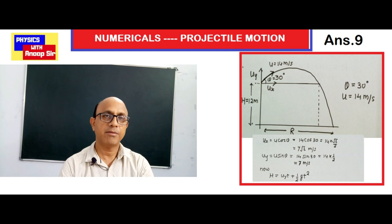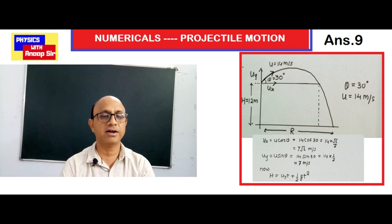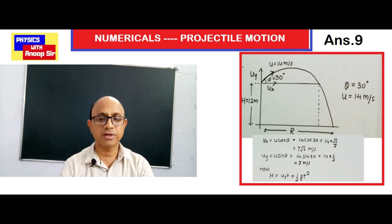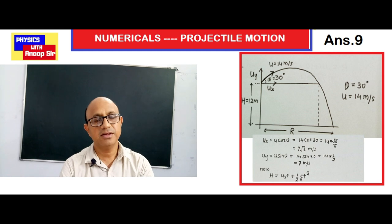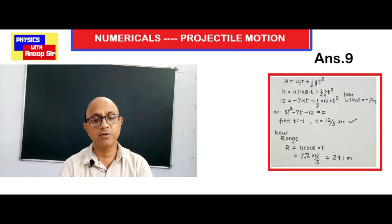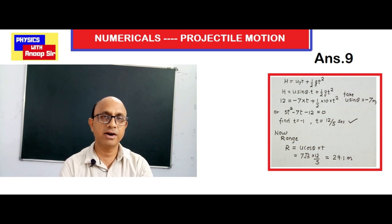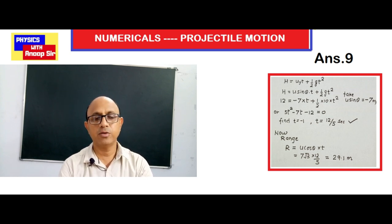We use the equation h = u sinθ × t + ½gt² to calculate time. We again take the vertical component as minus 7 meter per second because at the starting point the vertical component is upward but the ball comes down below. Substituting values: −7t + ½ × 10 × t² = 12, giving quadratic equation 5t² − 7t − 12 = 0, from which time t = 12/5 seconds.